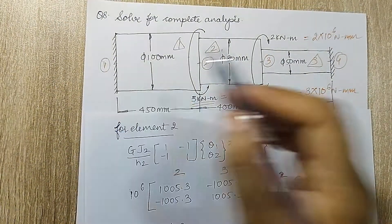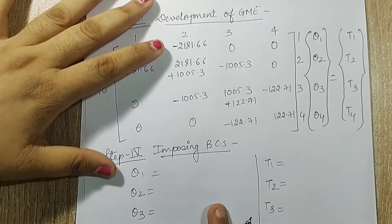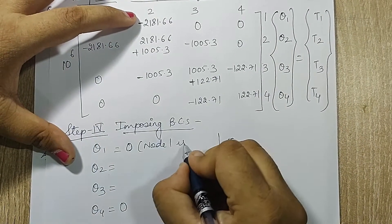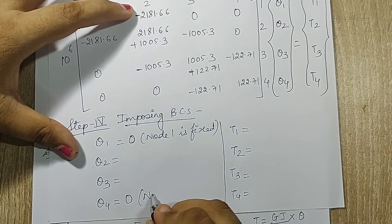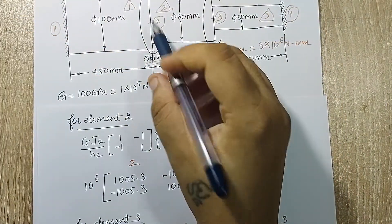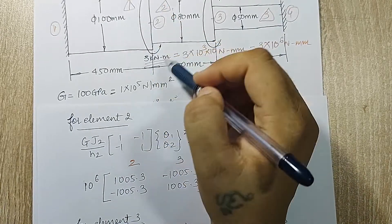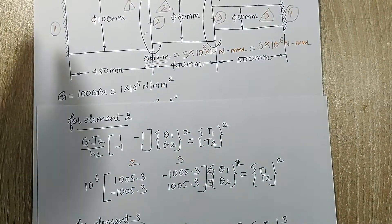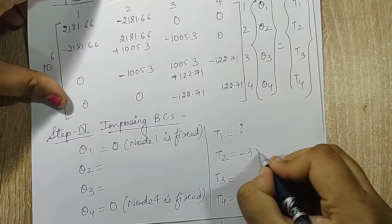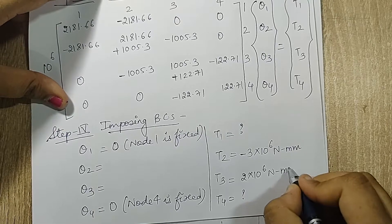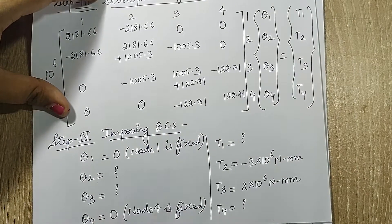Looking at the diagram, nodes 1 and 4 are fixed, so there will be no angle of twist at these positions. Therefore theta 1 = 0 and theta 4 = 0. Node 1 is fixed and node 4 is fixed. Theta 2 and theta 3 will be unknown. At node 2, there is a torque of 3 kNm. Assuming anti-clockwise is negative and clockwise is positive, 2 kNm is clockwise positive. So t2 is minus 3 into 10 raised to 6 N·mm and t3 is 2 into 10 raised to 6 N·mm.